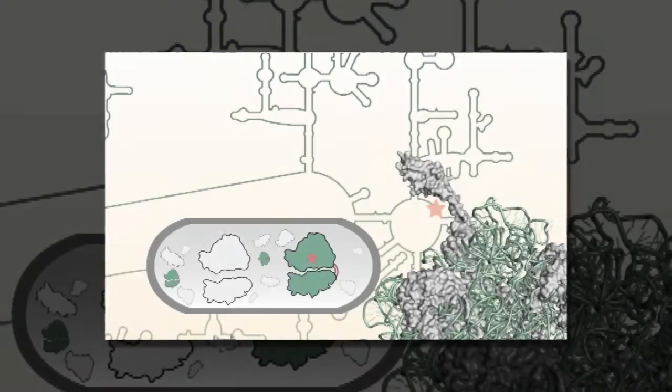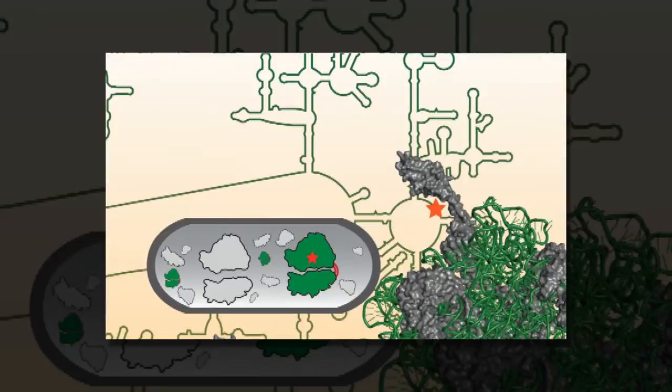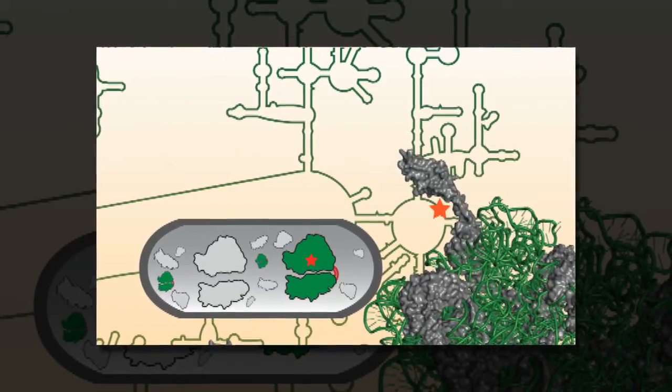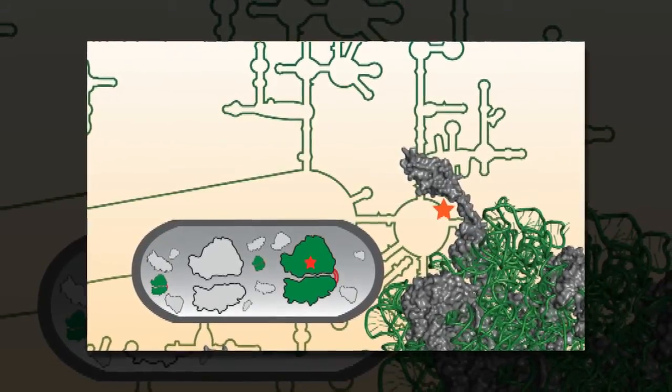The ribosome's two subunits, one large and one small, unite on mRNA to form the functional unit that assembles the protein in a process called translation.